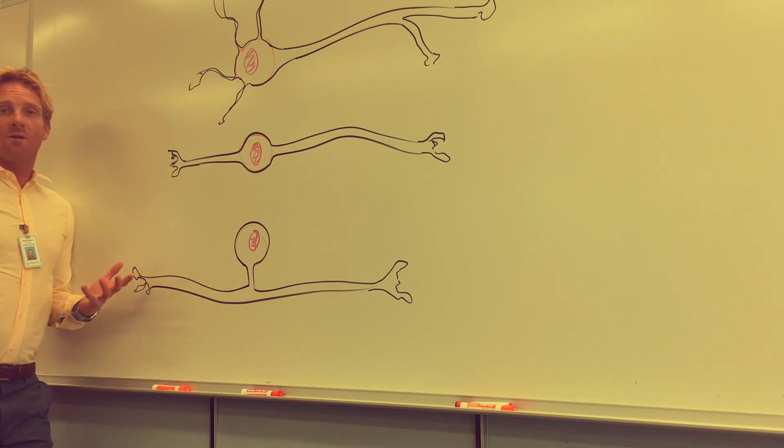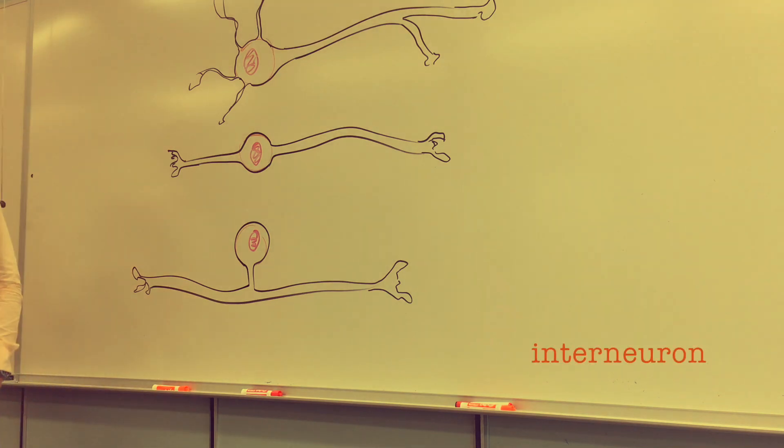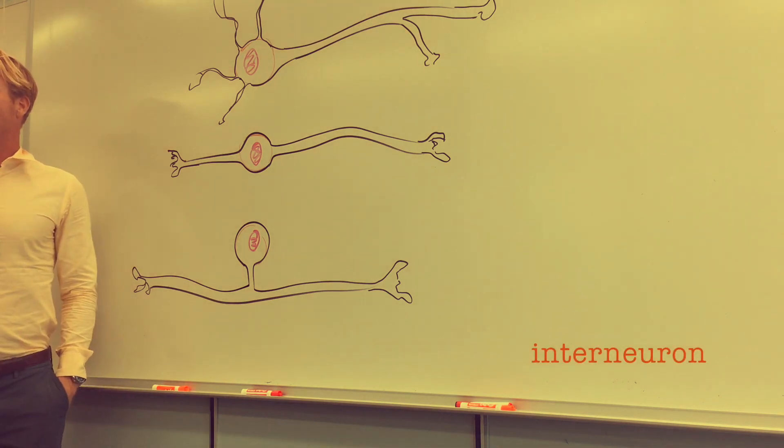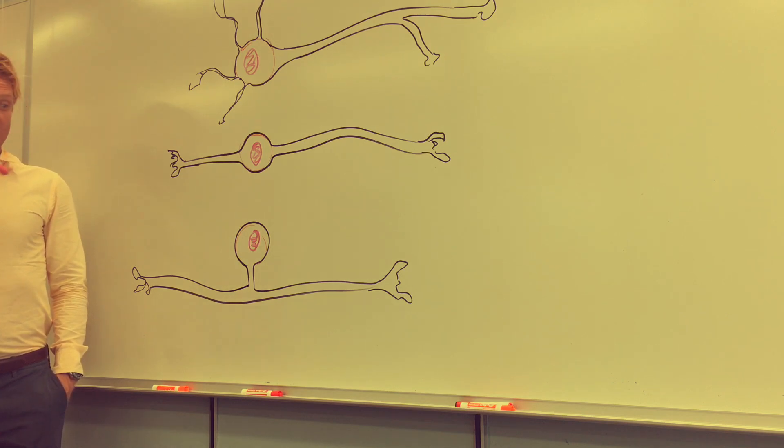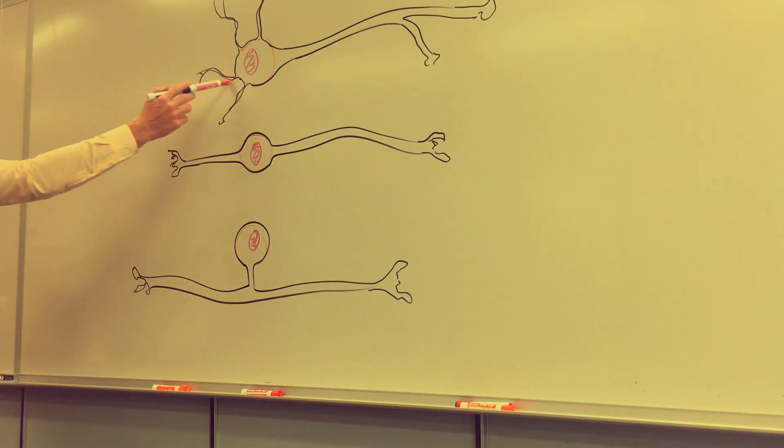Finally, another category of neuron you might come across is called an interneuron. An interneuron is simply just a neuron that connects two other neurons together. These are quite common when we talk about reflexes and circuits within the brain. So, it's a nice little summary. I think the key words here are afferent neuron, efferent neuron, interneuron, multipolar, bipolar, and unipolar neuron.